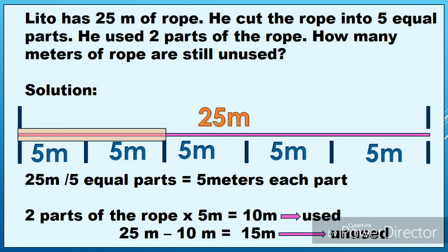Next problem: Lito has 25 meters of roof. He cut the roof into 5 equal parts. He used 2 parts of the roof. How many meters of roof are still unused? Meron siyang 25 meters na roof — nasa illustration. Kinat niya into 5 equal parts, tatay, didivide natin siya sa 5. 25 divided by 5 equals 5 meters each part.